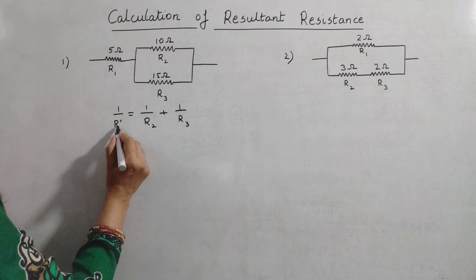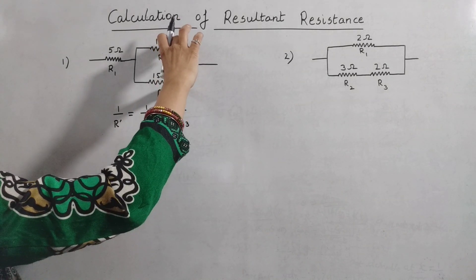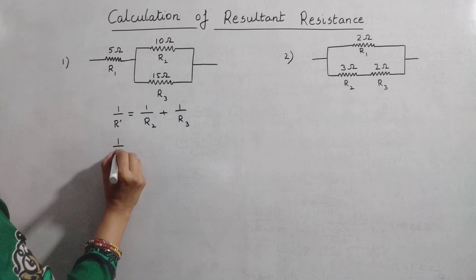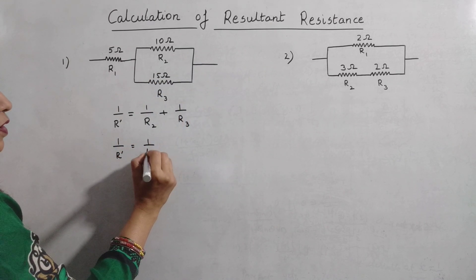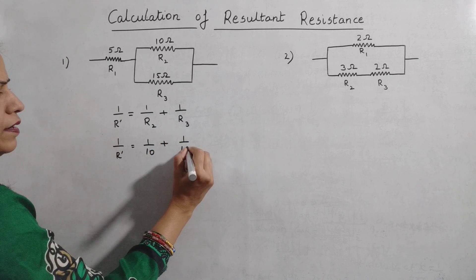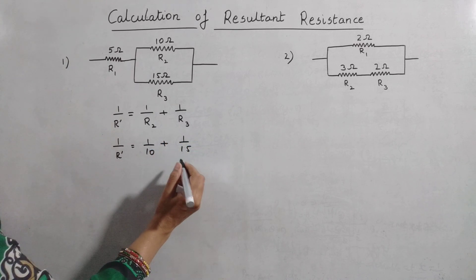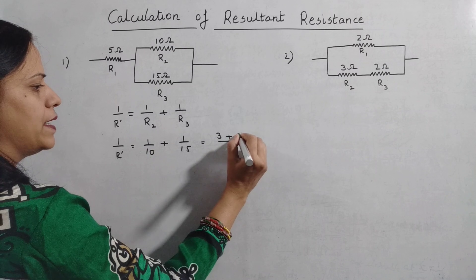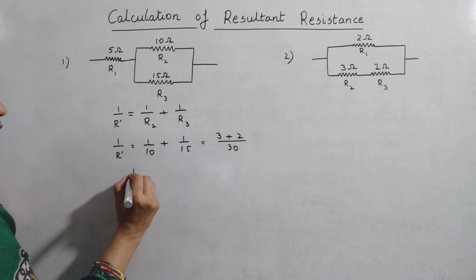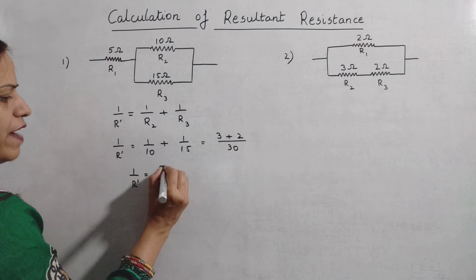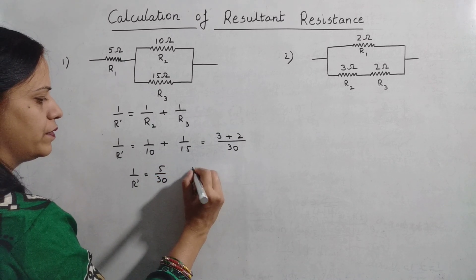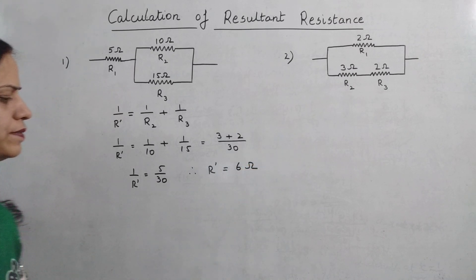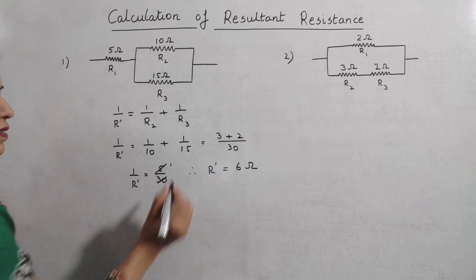R' will be the resultant of R2 and R3. So, 1 upon R' will be 1 upon 10 plus 1 upon 15. The LCM of 10 and 15 is 30, so this comes out to be 3 plus 2. Therefore, 1 upon R' is 5 by 30, and R' is equal to 6 ohms because 5 times 6 is 30.